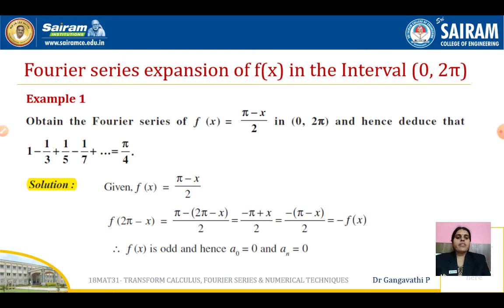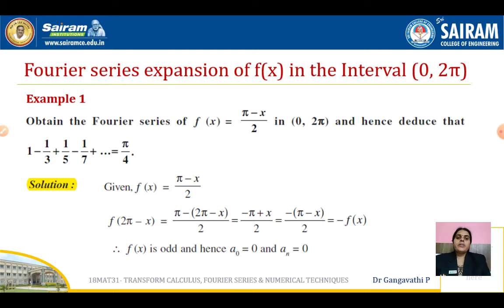Here, Fourier series expansion of f(x) in the interval 0 to 2 pi — we are going to discuss this first. We will get straight into the problem because most of the procedure remains the same; only the interval is changed. Let us take the first example: obtain the Fourier series of f(x) = (π - x)/2 in the interval 0 to 2 pi, and hence deduce that 1 - 1/3 + 1/5 - 1/7 + ... = π/4.